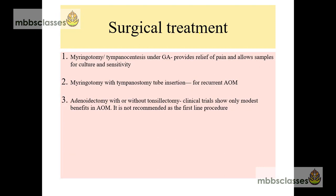Now coming to the surgical treatment of acute otitis media. The first option is myringotomy or tympanocentesis, which is usually done under general anesthesia. The advantage of myringotomy is that it provides relief of pain and also provides a sample for culture and sensitivity. In cases of recurrent otitis media, it is recommended to undergo myringotomy with tympanostomy tube insertion. In patients with enlarged adenoids hampering eustachian tube drainage and serving as a source of biofilm, adenoidectomy with or without tonsillectomy can be done — though clinical trials show only modest benefit and it is not recommended as a first line procedure.